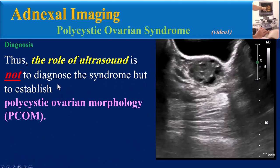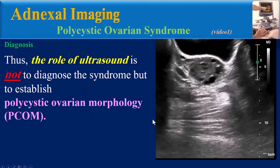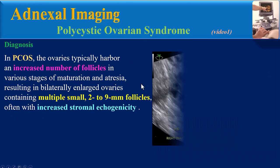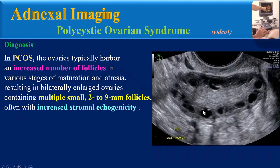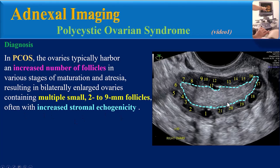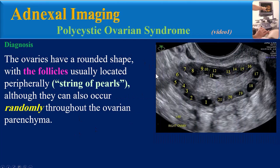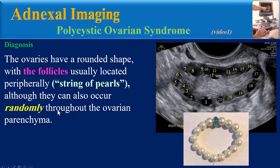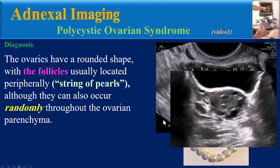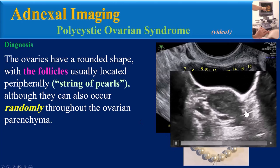The role of ultrasound is not to diagnose the syndrome, but to establish polycystic ovarian morphology. In PCOS, the ovaries typically harbor an increased number of follicles in various stages of maturation and atresia, resulting in bilaterally enlarged ovaries containing multiple small follicles between 2 to 9 millimeters, often with increased stromal echogenicity. The ovaries have a rounded shape with follicles usually located peripherally — famously known as the 'string of pearls' — though they can also occur randomly throughout the ovarian parenchyma.